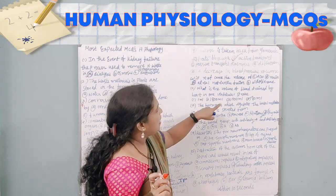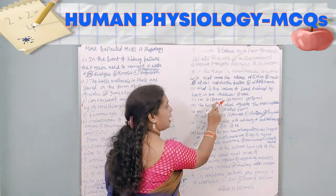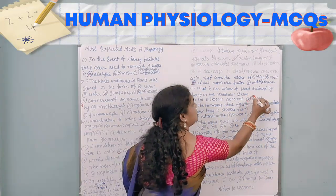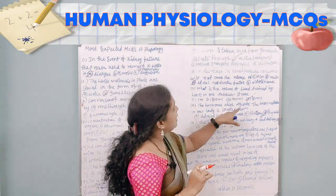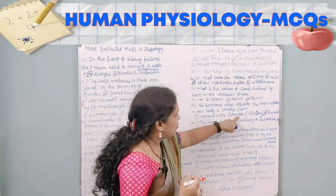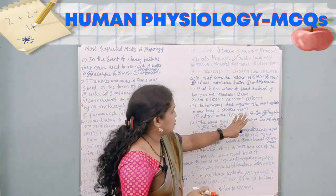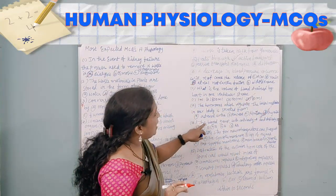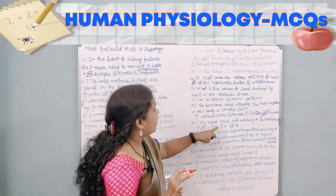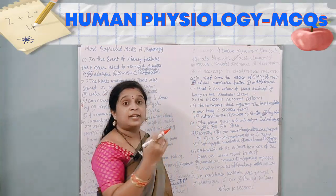The eleventh question: what is the volume of blood drained by the heart in one ventricular stroke? Options are 1 ml, 800 ml, 500 ml, and 80 ml. The answer is 80 ml. The twelfth question: the hormone regulating basal metabolism is secreted from — adrenal cortex, pancreas, pituitary gland, or thyroid? The answer is thyroid. The thirteenth question: which blood group has both antibody A and antibody B? The answer is blood group O — antibody A is present in RBCs and antibody B is present in plasma.